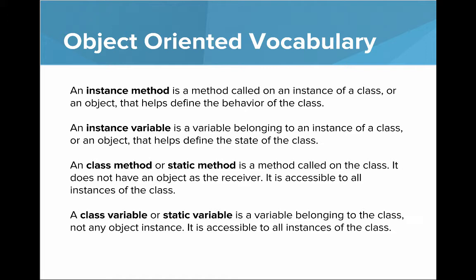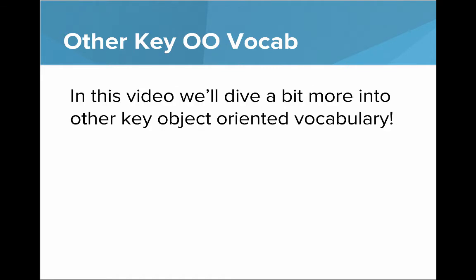A class method or static method is a method called on the class. It does not have an object as the receiver and it's accessible to all instances of the class. A class variable or static variable is a variable belonging to the class, not any object instance. It's accessible to all instances of the class.